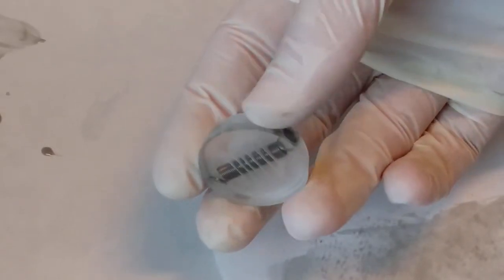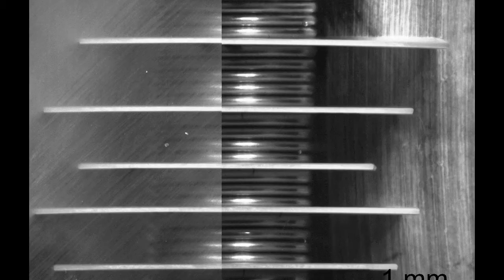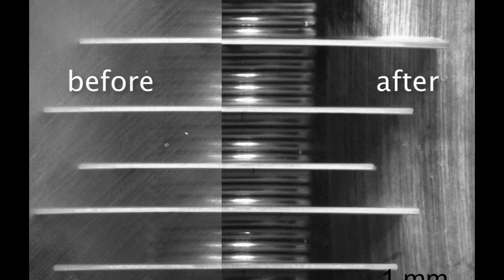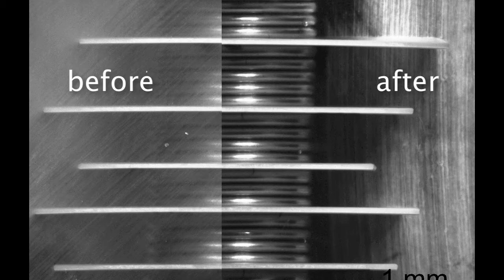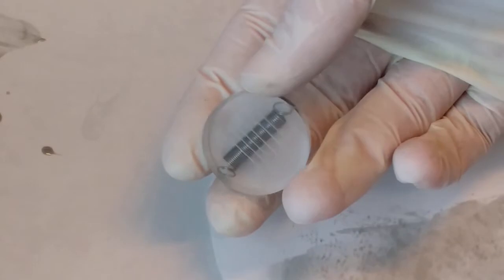Now you see that the dull surface has become much more glossy and transparent. The spring you see inside the plastic is now clearly seen. This stage you achieve when you reach the three micrometer diamond paste.